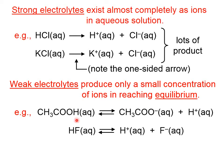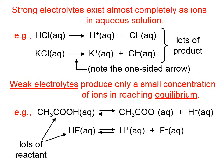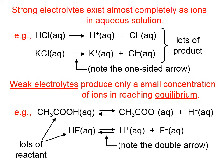Another example of a weak electrolyte is hydrofluoric acid. Hydrofluoric acid contains a very large percentage of HF molecules floating around in solution, and only a very small fraction of hydrogen ions and fluoride ions that have actually ionized. In a weak electrolyte solution, we have lots of neutral reactant and comparatively small amounts of charged products.